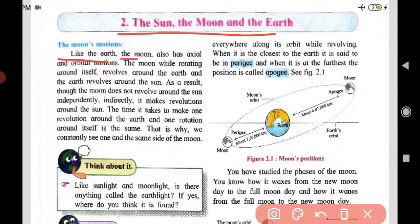Like the earth, the moon also has axial and orbital motions. While rotating around itself, the moon revolves around the earth, and the earth revolves around the sun. As a result, though the moon does not revolve around the sun independently, indirectly it makes a revolution around the sun — because the moon moves around the earth, and the earth moves around the sun.